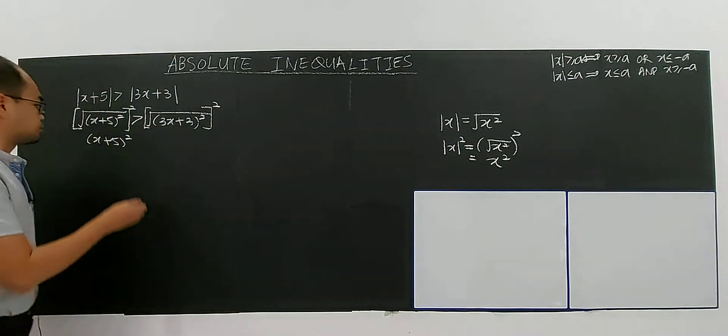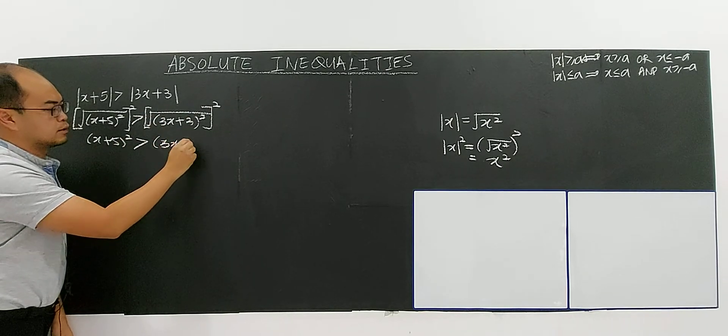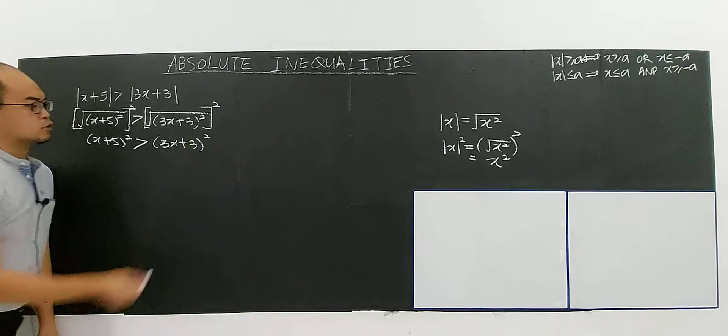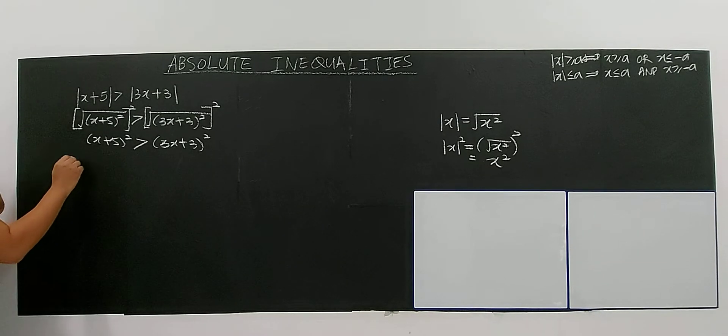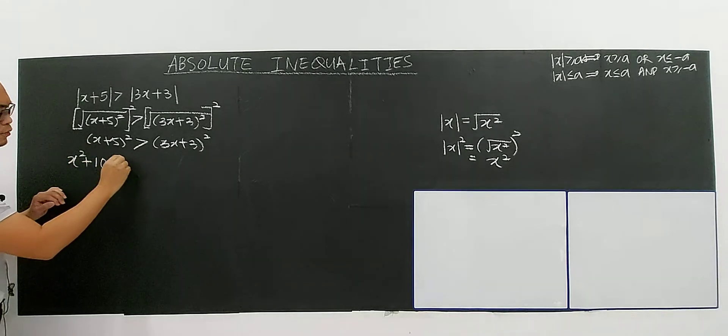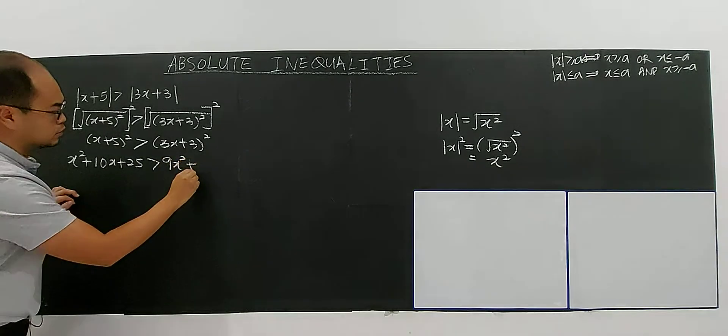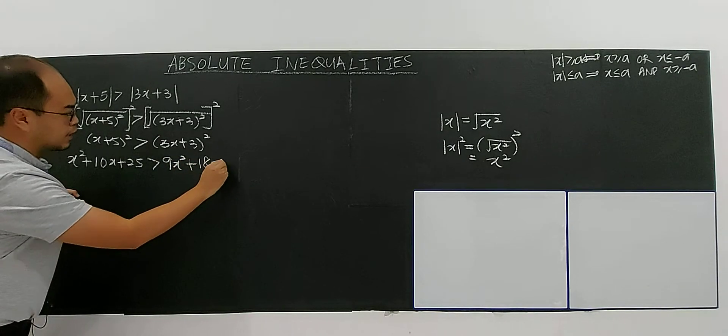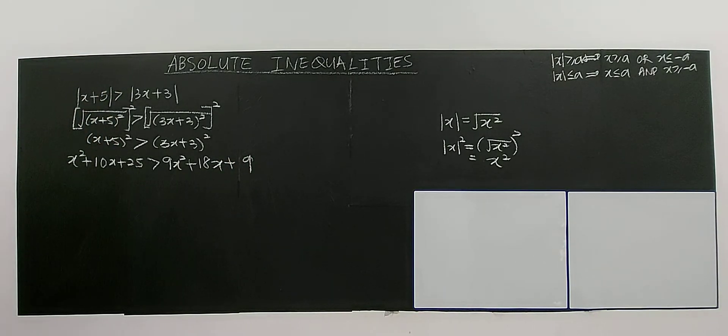So now, then we have greater than, it will be square. We have 3x plus 3 to the power of 2. So as usual, you have to expand the quadratic. Become x to the power of 2 plus 10x, 25 greater than 9x to the power of 2. So, 18x plus 9.